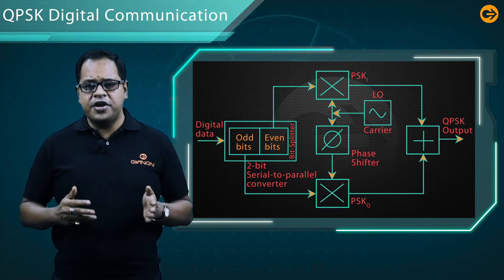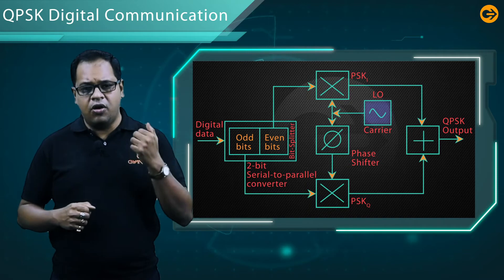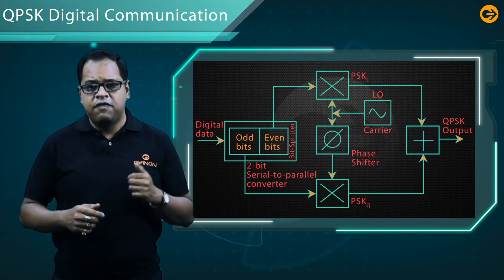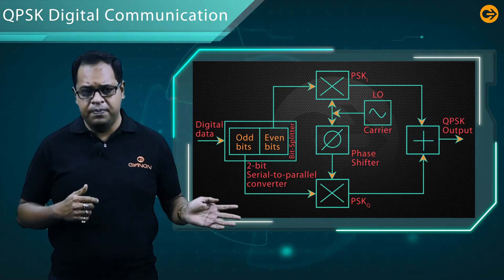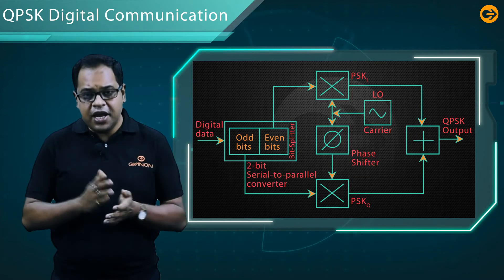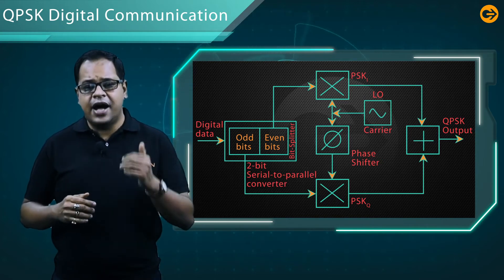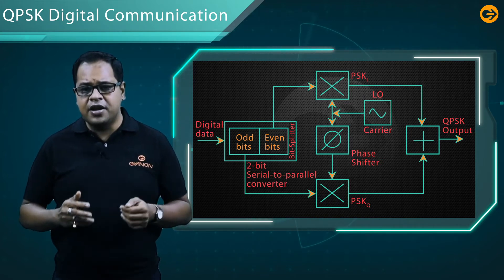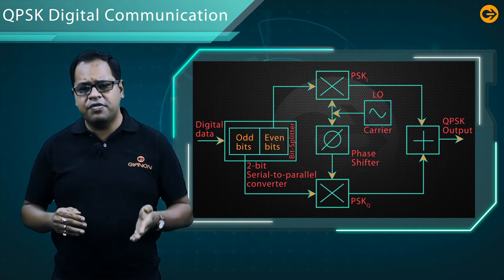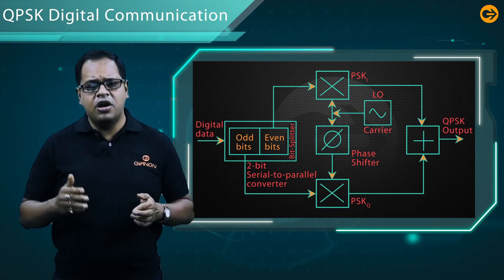The QPSK modulator uses a bit splitter, two multipliers with a local oscillator, a two-bit serial to parallel converter, and a summer circuit. At the modulator's input, even bits and odd bits are separated by the bit splitter, then multiplied with the same carrier to generate odd BPSK (PSK-I) and even BPSK (PSK-Q). The PSK-Q signal is phase shifted by 90 degrees before being modulated.